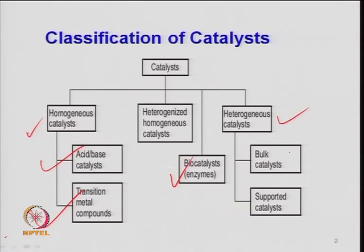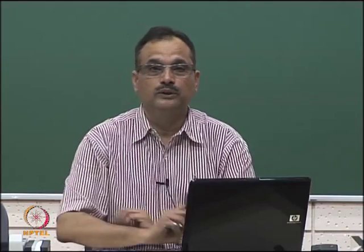In heterogeneous catalysts we have the bulk catalyst — the entire material itself acts as a catalyst. Just like alumina for dehydration reactions or zeolite ZSM-5, normally used as a support, but they can be used as a catalyst also. That is known as a bulk catalyst. In supported catalysts, we would like to have the active metal deposited on a large surface area. The active metal concentration is low, but the support has very high surface area and can provide acidic sites — a metal function and acid function — called a bifunctional catalyst.